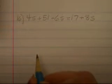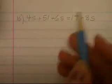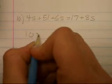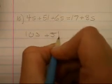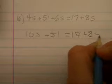This is question 16 from the test. And how would you start this out with combining like terms? It would be 4s plus 6s, which equals 10s plus 51 equals 17 plus 8s.